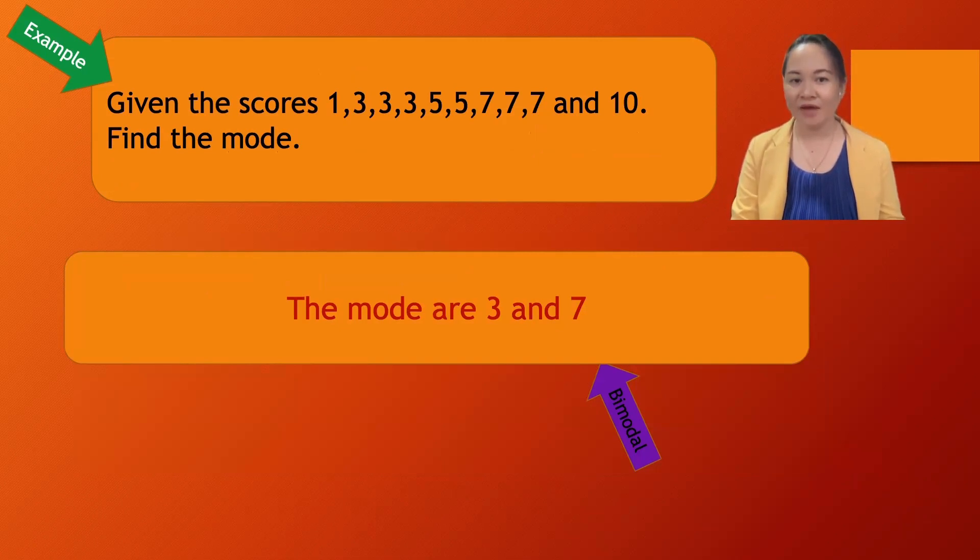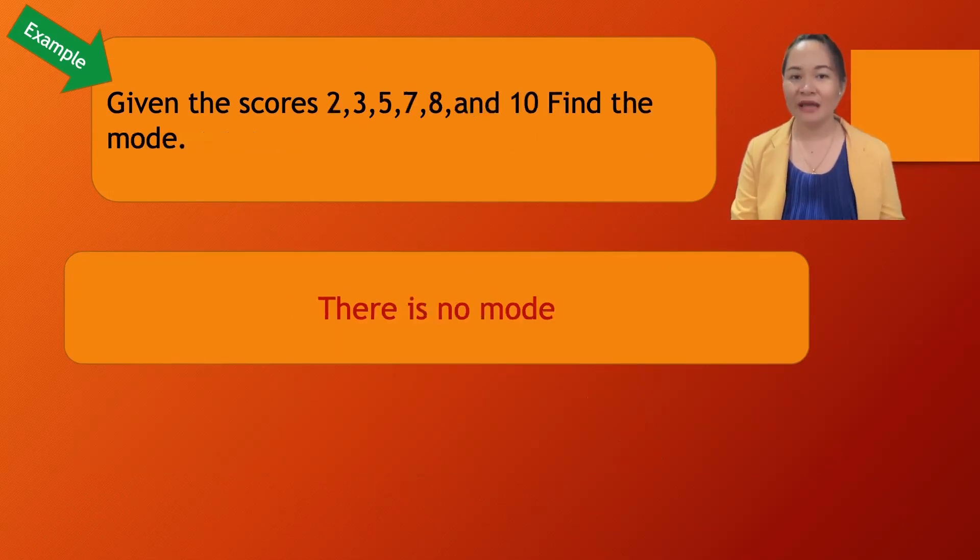This is what we call bimodal. This is an example of bimodal—there are two modes. You can also have multimodal. Another example: given the scores 2, 3, 5, 7, 8, and 10, find the mode.